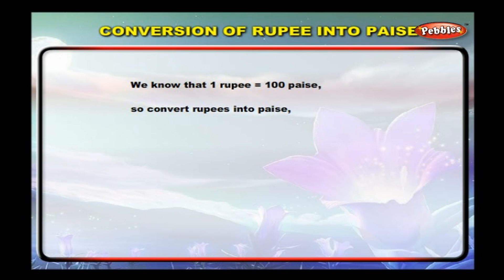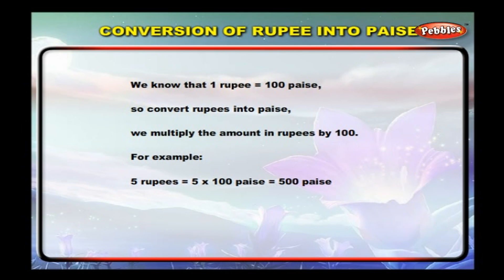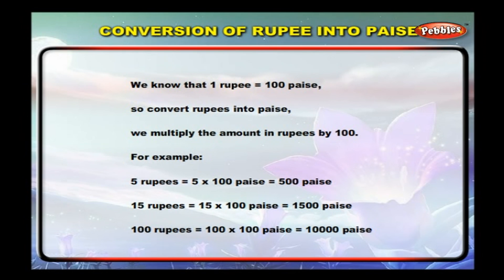Conversion of rupees into paisa: we know that 1 rupee is equal to 100 paisa. To convert rupees into paisa, we multiply the amount in rupees by 100. For example, 5 rupees equals 500 paisa; 15 rupees equals 1500 paisa; 100 rupees equals 10,000 paisa.